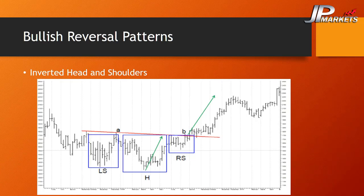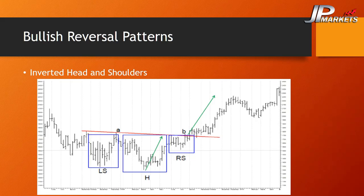Let's look at bullish reversal patterns first. The pattern in front of you is called the inverted head and shoulders, which is just an upside down version of the head and shoulders. It has a shoulder, a head which extends further, and then another shoulder generally in line with the first but clearly offset from the head. The breakout is upside through the neckline and the duration could take several months or even a year — these can be very long cycles. The target is generally the distance from the top of the head to the neckline.